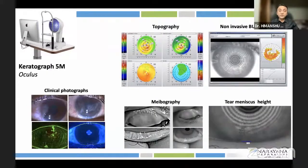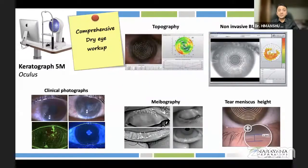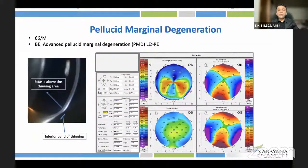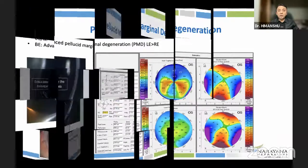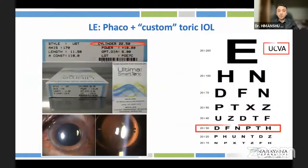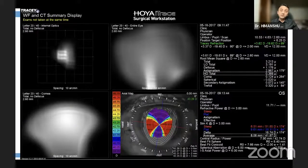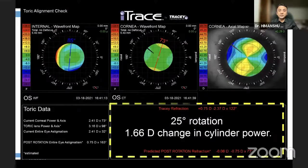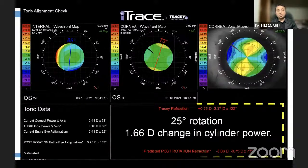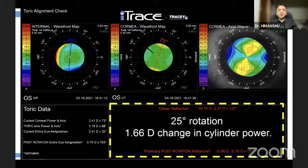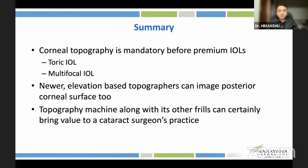Adding all these values into the IOL calculator can give tremendous outcomes. Certain topographers can give detailed anterior segment analysis and be used for a comprehensive dry eye workup. Pellucid marginal degeneration gives a very typical against-the-rule astigmatism with a kissing bird sign or butterfly wing pattern. Topographers like iTrace can tell you how much quality of vision improves and can show the outcome of toricity — whether the IOL needs to be rotated.